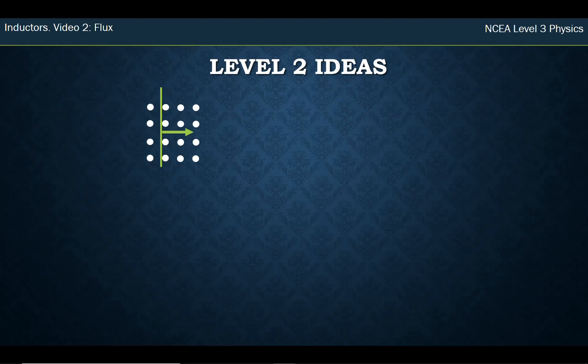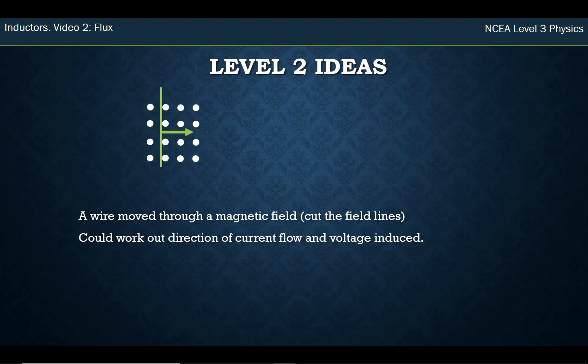So in level 2, what we had were some very basic situations where we had a wire that we dragged through a magnetic field. All those dots there in the picture are me indicating that it's a magnetic field coming out of the page. We dragged this wire through and some of you learned that if the wire cuts the field lines, it generates a voltage. We could work out which way the voltage was induced, which is positive and negative, and then we could hook up another wire and make a circuit and work out how the current was flowing when we had this wire being dragged through, a nice straight wire.